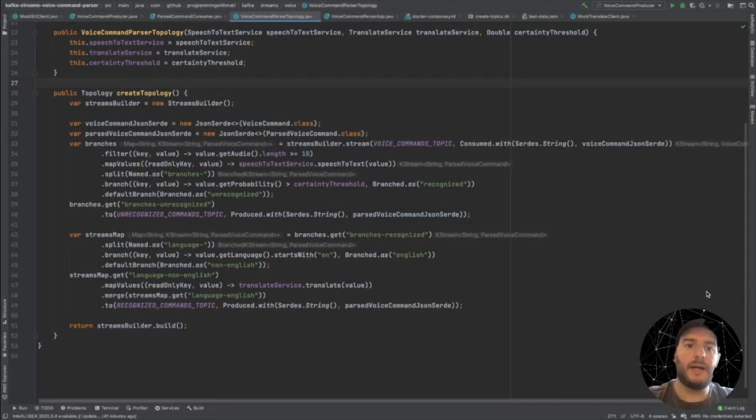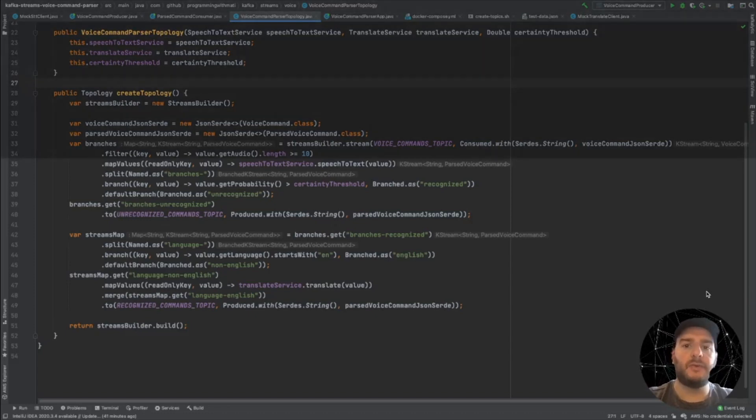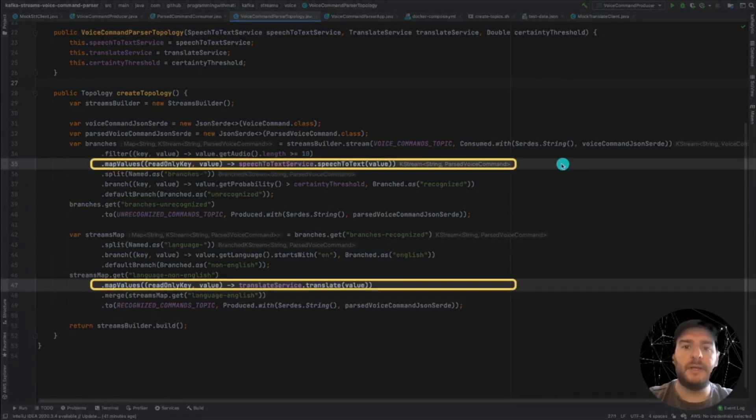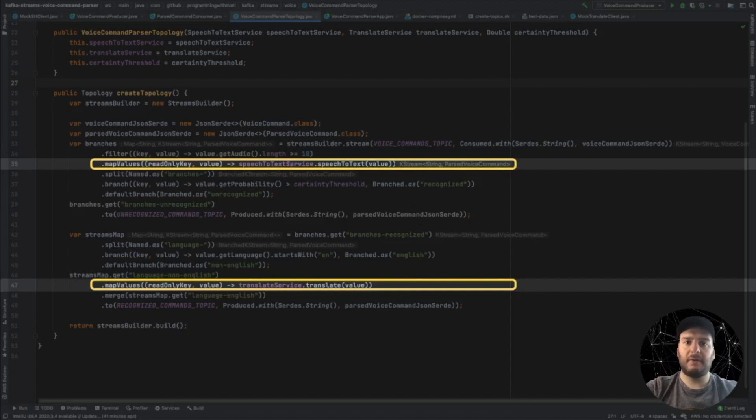If we go back to our voice command tutorial, we can see how we use map values to transform the speech into text and also how we use it to translate non-English messages. If you haven't seen the voice command parser tutorial yet, I really encourage you to take a look at it. I will put a tag in this video so that you can follow it. It's a very interesting tutorial in which you will be able to understand stateless operations in Kafka Streams.